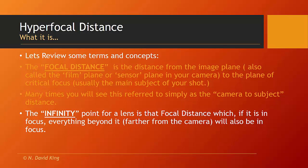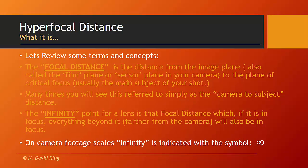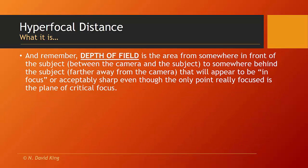Here's something that a lot of people don't understand: on each lens, on the footage scale, there's an infinity mark. What infinity means for a lens in the optical world is that if that point in the distance is in focus or within the depth of field, then everything beyond it — everything farther from the camera — will also be in focus. On most camera footage scales, infinity is indicated with the symbol that looks like a number eight laying on its side.